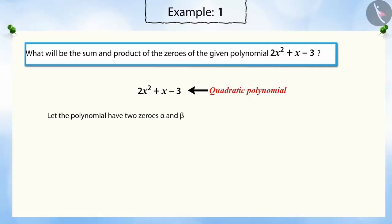In the previous video, we learnt that the sum of the zeros of the quadratic polynomial is the negative ratio of the coefficient of x to the coefficient of x². Substituting the values of the coefficients of x and x² gives the sum of the zeros as -1/2.